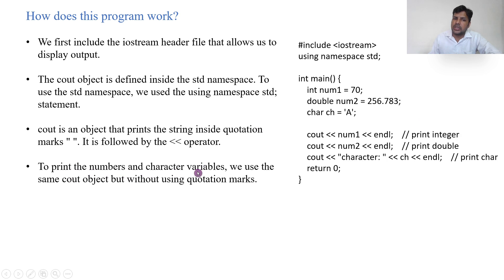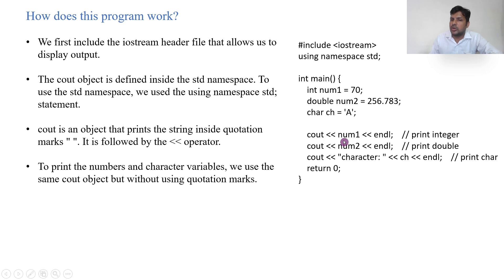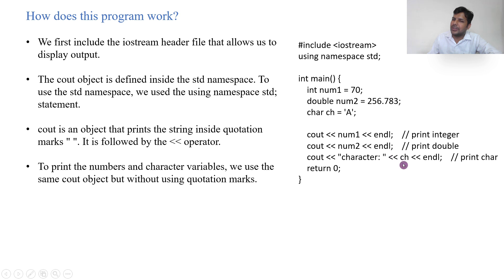To print numbers and character variables, we use the same cout object but without quotation marks. For example, if you have int num1 = 70, double num2 = 256.789, and char ch = 'A', when you write cout without quotation marks and use num1, it understands num1 is a variable and prints 70, not 'num1'. If you use ch without quotation marks, it prints A; with quotation marks, it prints 'ch' literally.